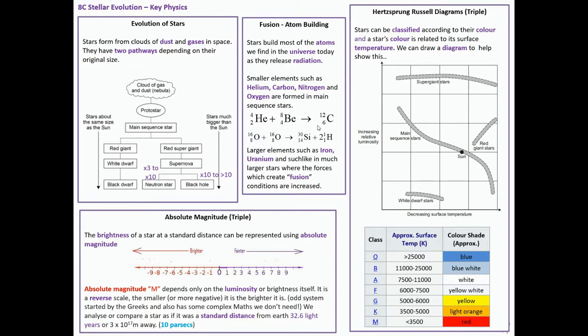Oxygen, two oxygens could be pushed together to make silicon plus two hydrogens. And those hydrogens would go on to be fusion again. Now, larger elements such as iron, uranium and such like are made in much larger stars where the fusion forces are increased. So stars are basically our atom generators.